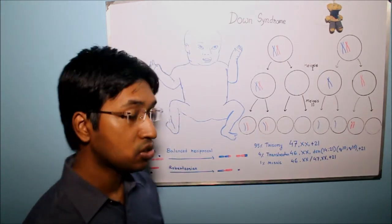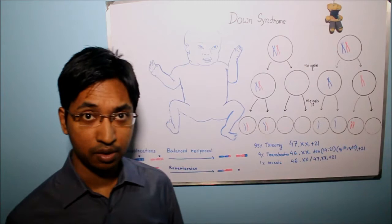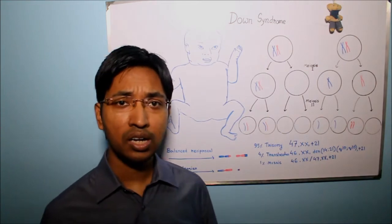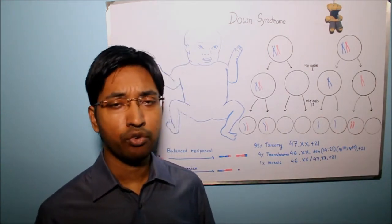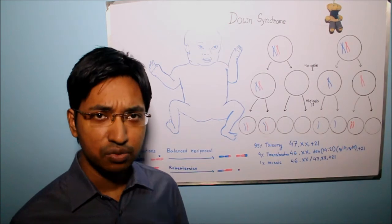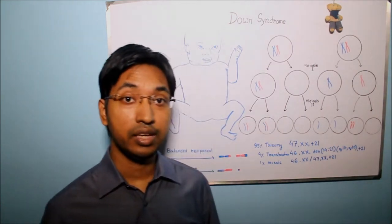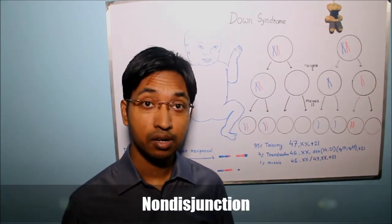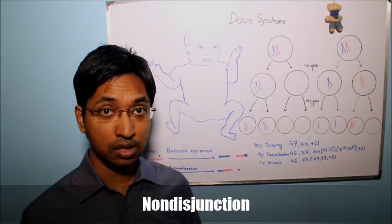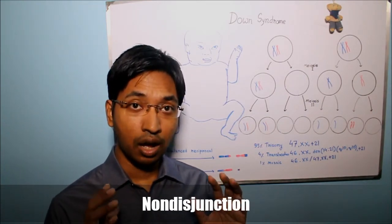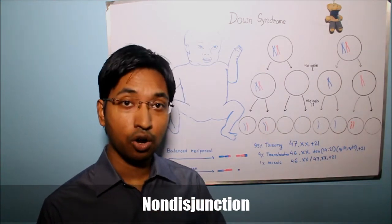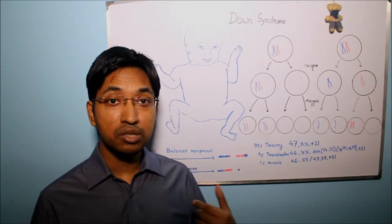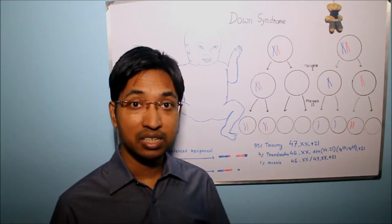The first mechanism is trisomy 21. The examiner may ask you: why are we seeing three copies of chromosome 21? The answer is non-disjunction. Always remember, non-disjunction means failure of a pair of homologous chromosomes or a pair of sister chromatids to separate during nuclear division in cell division.